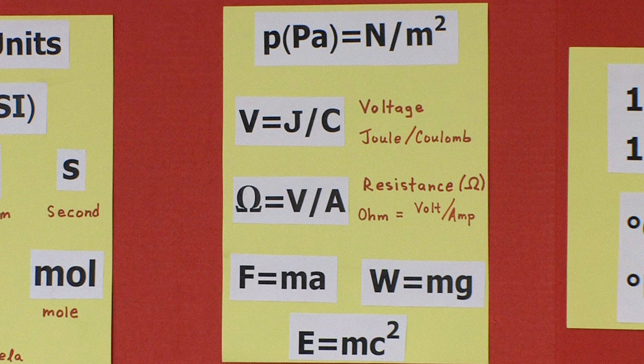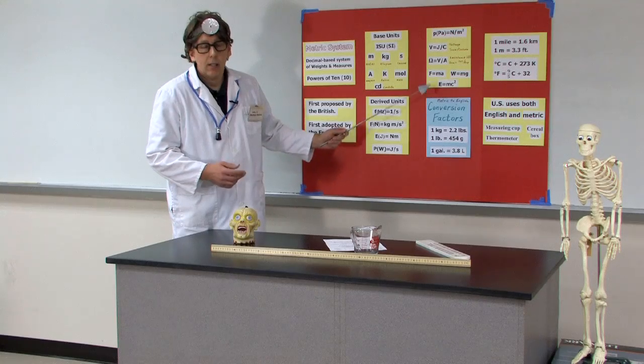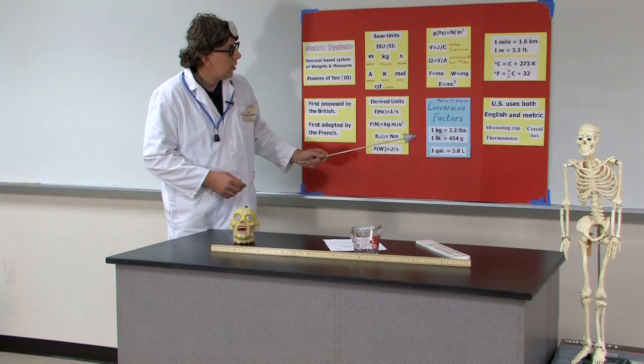And a variety of equations are used in the physics world. Force equals mass times acceleration. Weight is mass times gravity. And perhaps the most famous equation of our time: energy equals mass times the speed of light squared — Einstein's equation.